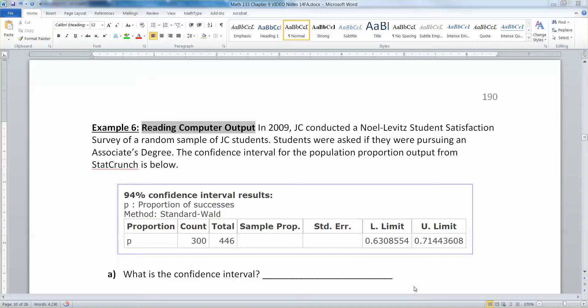Let's read it. In 2009, JC, Jackson College, conducted a Noel Levitt student satisfaction survey of a random sample of JC students. Students were asked if they were pursuing an associate's degree. The confidence interval for the population proportion output from the StatCrunch computer program is below. The two big programs I use are StatCrunch and Minitab, so be prepared for either one to show up.